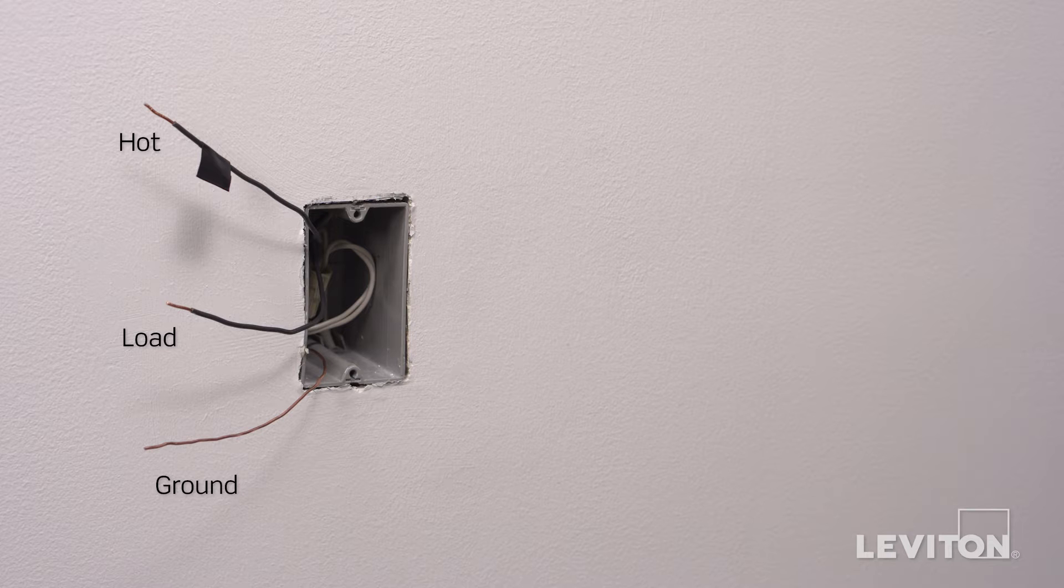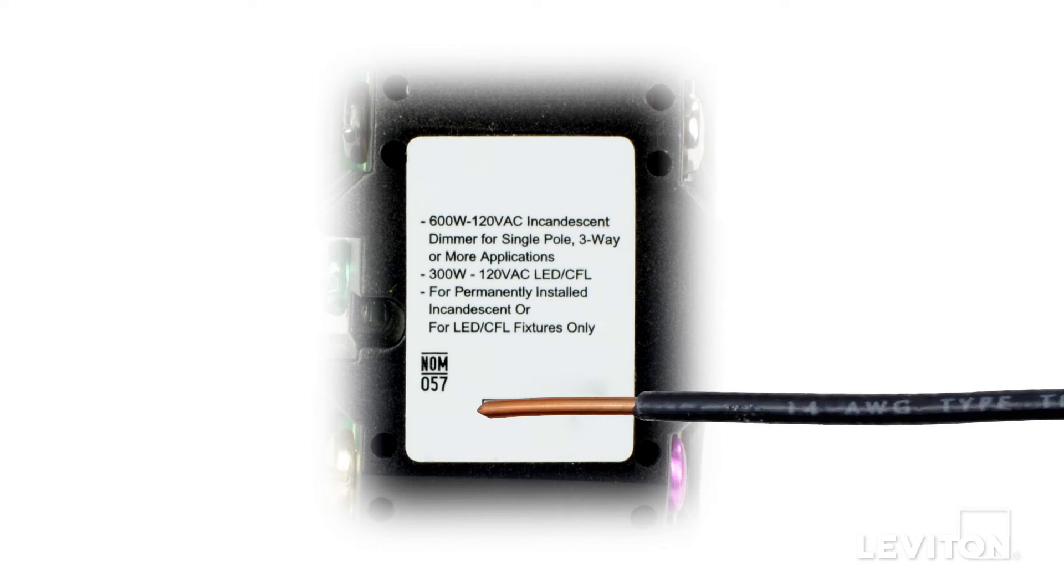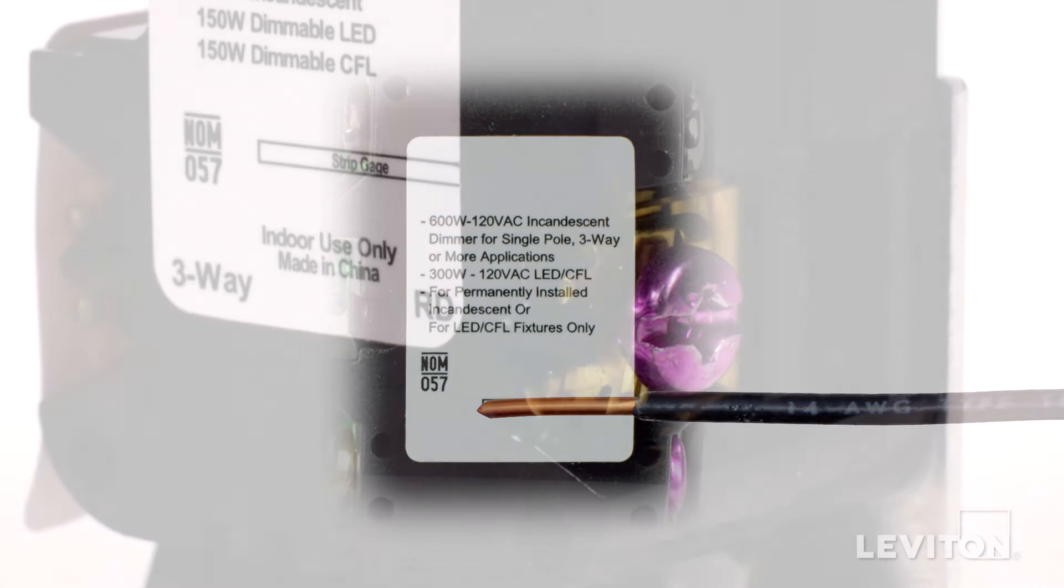Next, you need to be sure that the wires are prepared for installation. Start by making sure the wires are straight and stripped according to the strip gauge located on the back of the device.